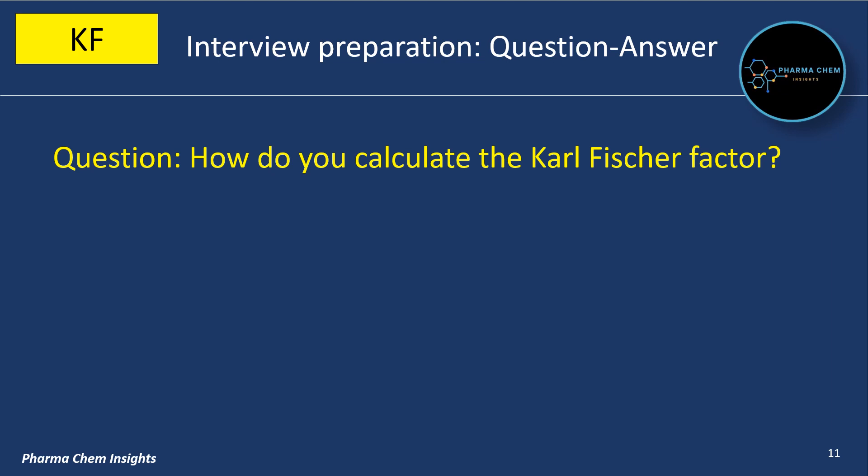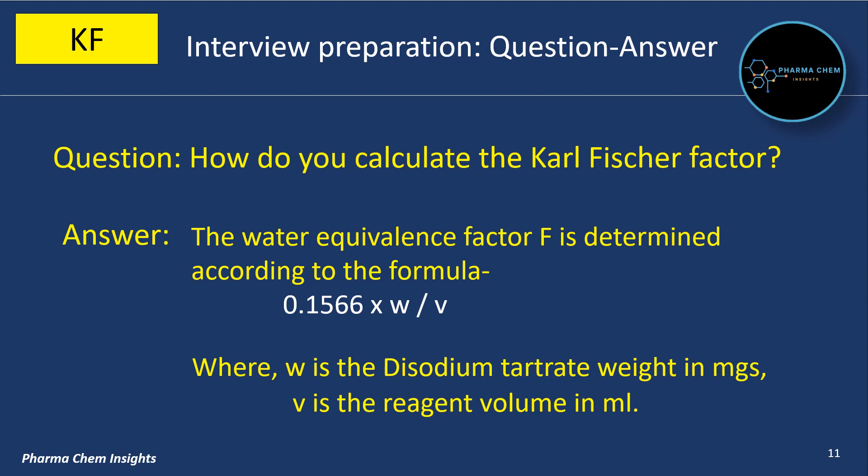How do you calculate the KF factor? The water equivalent factor F is determined according to the formula: F = 0.1566 × W divided by V, where W is the weight of disodium tartrate in mg and V is the reagent volume in ml.